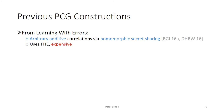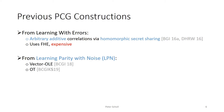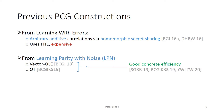Several previous works have constructed PCGs for useful classes of correlations. For instance, from learning with errors, we can construct a PCG for arbitrary additively secret shared correlations using homomorphic secret sharing. However, this is based on fully homomorphic encryption and is computationally very expensive. There are also recent constructions based on the learning parity with noise assumption. These can be used for simple correlations like vector oblivious linear function evaluation and oblivious transfer, and have been shown to have good concrete efficiency in recent works.